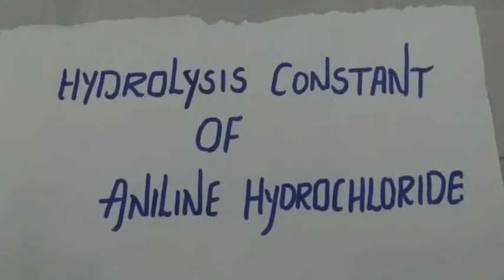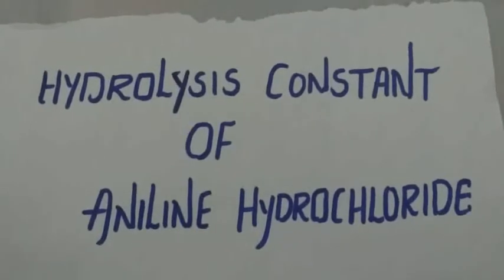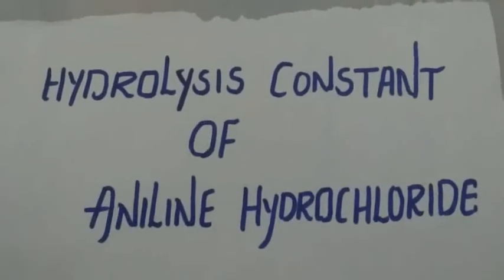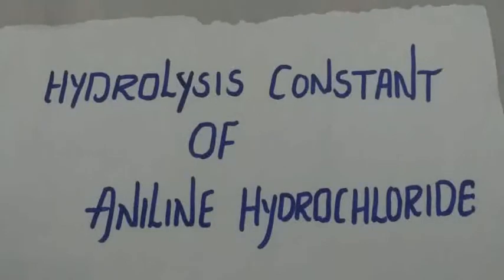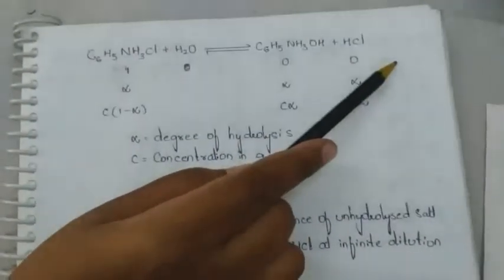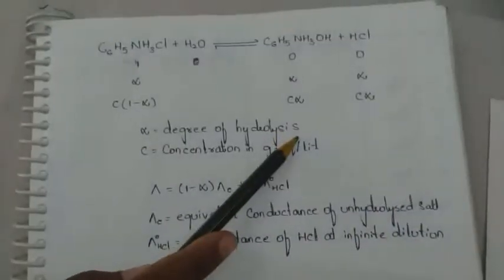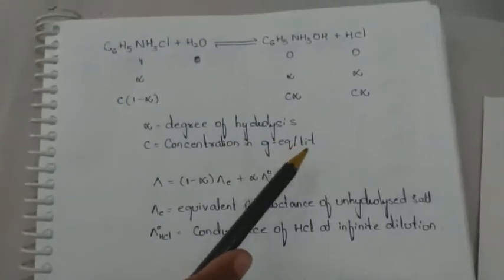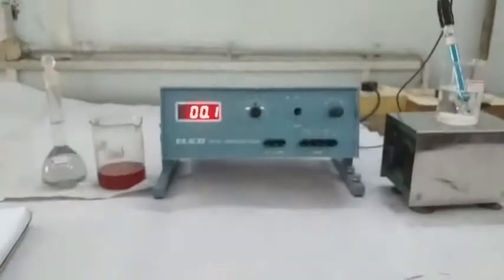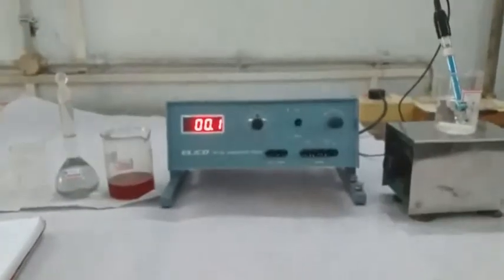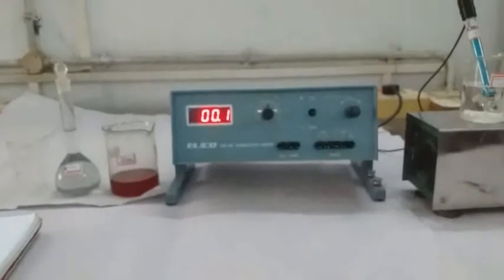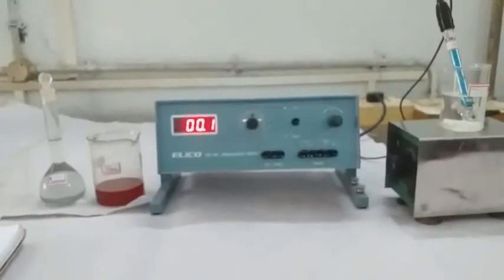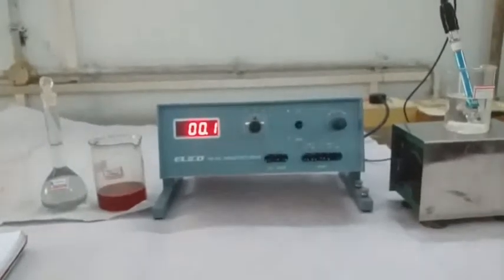Degree of hydrolysis of a salt. This method is applicable only for a salt made from a weak acid and a strong base, or a weak base and a strong acid. Here we consider aniline hydrochloride, which is made from a strong acid and a weak base. When aniline hydrochloride is dissolved in water, it forms aniline hydroxide and hydrochloric acid. Here alpha is the degree of hydrolysis and C is the concentration in gram-equivalents per liter. The electrical conductance of the above equilibrium mixture is the sum of conductance due to the ionized but unhydrolyzed salt and partly due to hydrolyzed salts; conductance due to the weak base is neglected.